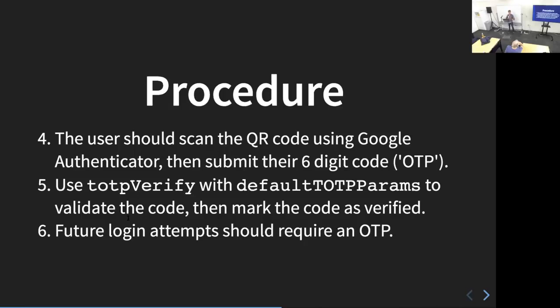The user scans the QR code using Google Authenticator and gets a six-digit code on their phone. You use `totpVerify` with the default TOTP params to validate the code and mark it as verified — so in the future when a user logs in, you require this OTP code along with their password. This is two-factor authentication. It's much more secure than just a password, and also more secure than SMS — there have been many recent attacks where someone has intercepted SMS messages or walked into a Verizon or T-Mobile store and asked an employee to transfer a phone number to their account.